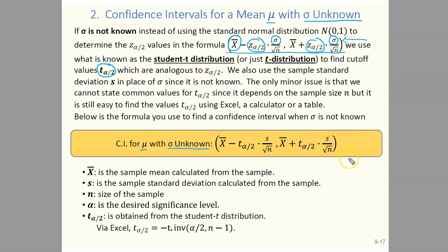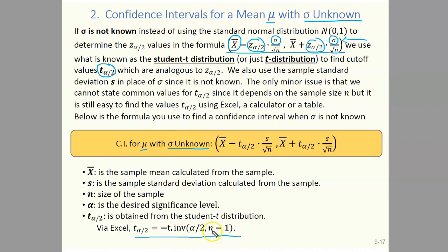To evaluate the t alpha over 2 values you can use Excel. The Excel command is: negative t dot inv, parenthesis alpha over 2 — where alpha is your significance level — comma n minus 1. Now n minus 1 is called your degrees of freedom, which we'll discuss more later.